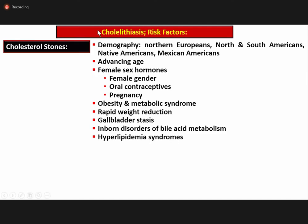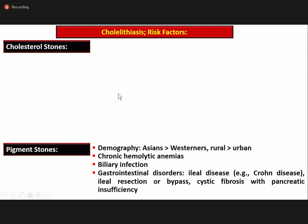This table from Robbins summarizes risk factors associated with gallstone formation. Cholesterol stone risk factors include advancing age, exposure to female sex hormones, obesity, metabolic syndrome, rapid weight reduction, gallbladder stasis, inborn disorders of bile acid metabolism, and hyperlipidemia syndromes. Pigment stones are more common in Asian than Western populations, more common in rural than urban areas, and are associated with chronic hemolytic anemia, biliary infection, and gastrointestinal disorders such as ileal disease, ileal resection or bypass, and cystic fibrosis with pancreatic insufficiency.